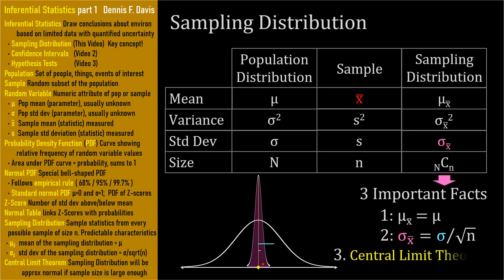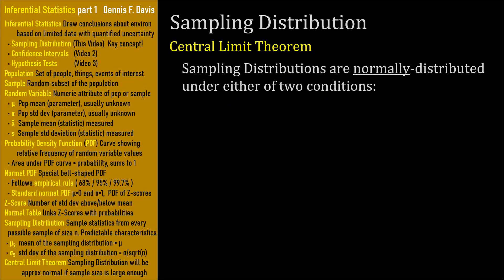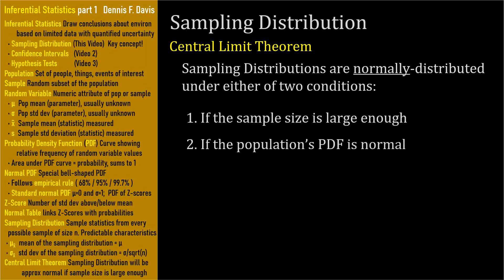The third important fact is a result of the central limit theorem. The central limit theorem states that sampling distributions are normally distributed under either of two conditions. First, if the sample size is large enough, the sampling distribution will be approximately normal regardless of the shape of the underlying population PDF. The second condition is that if the population is normally distributed, then the sampling distribution will be normal regardless of the sample size.